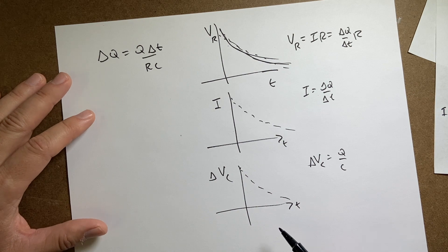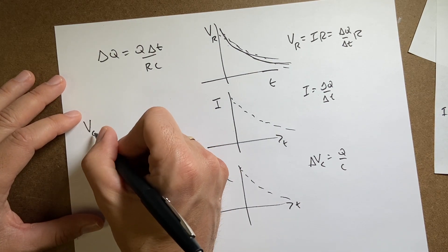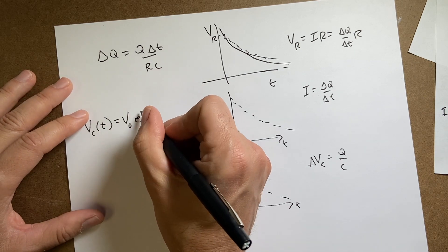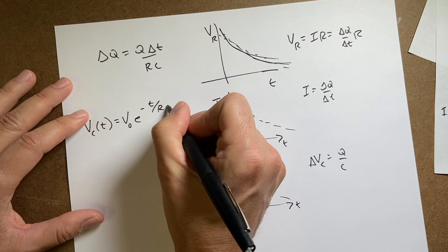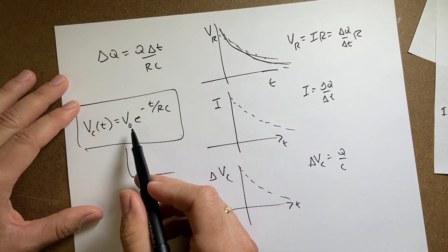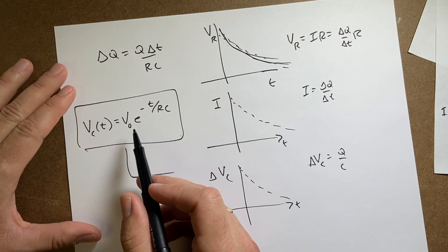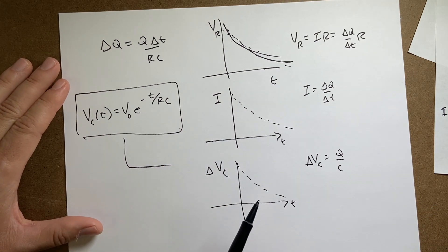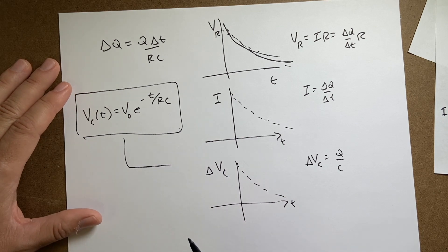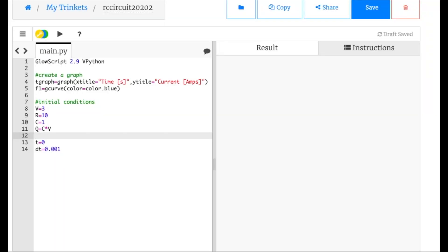To get that analytical expression you need differential equations, which I'll assume we're not going to do here. But we can plot the two — numerical and theoretical — and show that they're the same. Okay, so I've switched over to Python here and got a little head start. The first thing I need to do is make a graph — I'm going to plot the current in the resistor as a function of time, with time and current labeled on the axes.